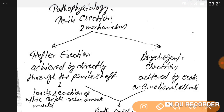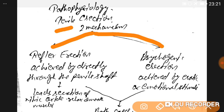Now let's discuss the mechanism of penile erection. There are two mechanisms: reflex erection and psychogenic erection. Reflex erection is achieved directly through stimulation of the penile shaft, while psychogenic erection is achieved through erotic or emotional stimuli.